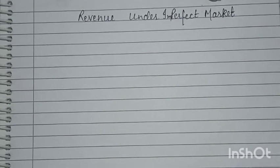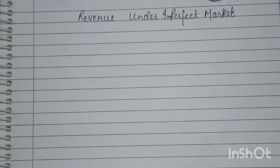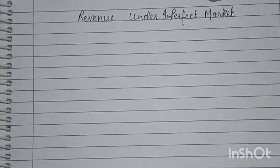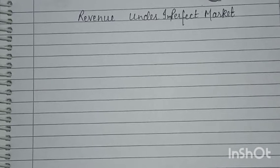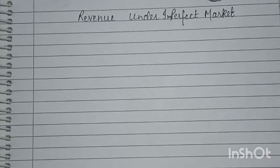Welcome back guys. Today's topic is revenue in the imperfect market. In the last video I told you about revenue in the perfect market — the relationship, tabular schedule, graph, and terminology. Please read the previous video; you will find the link in the video. If you are new, don't forget to subscribe and press the bell icon so you get notifications.